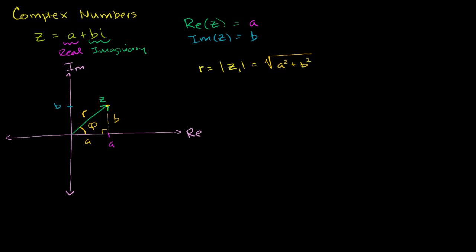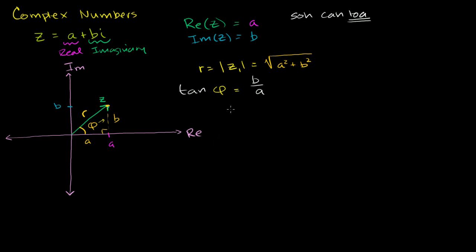If we want to figure out the argument, we have b and a. What trig function deals with the opposite side of an angle and the adjacent side? From SOHCAHTOA, tangent deals with opposite over adjacent. So the tangent of the argument is equal to the opposite side over the adjacent side — it is equal to b over a. And so if we wanted to solve for the argument, it is equal to the arctangent of b over a.